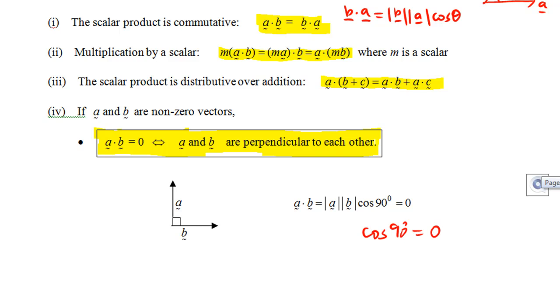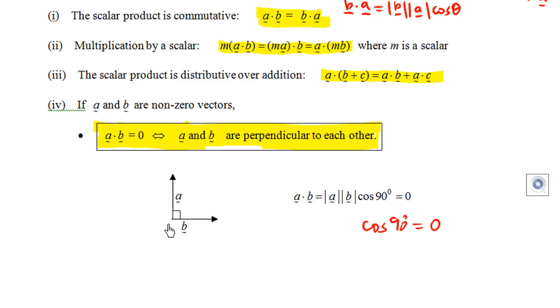Why is that so? Look at the diagram here. I have two vectors a and b perpendicular to each other. Then a dot b will be the magnitude of a times the magnitude of b times cosine 90. But we know cosine 90 is zero. That's why a dot b is equal to zero.